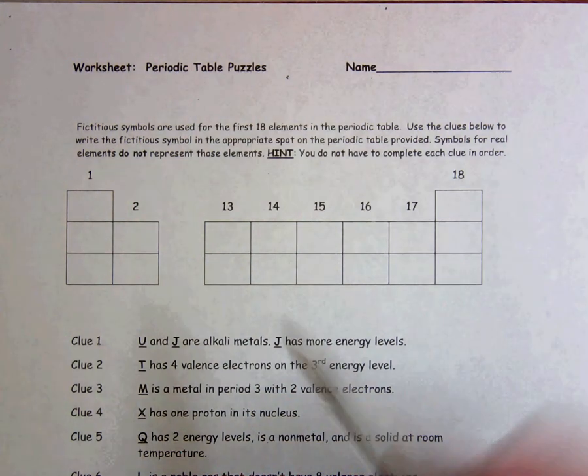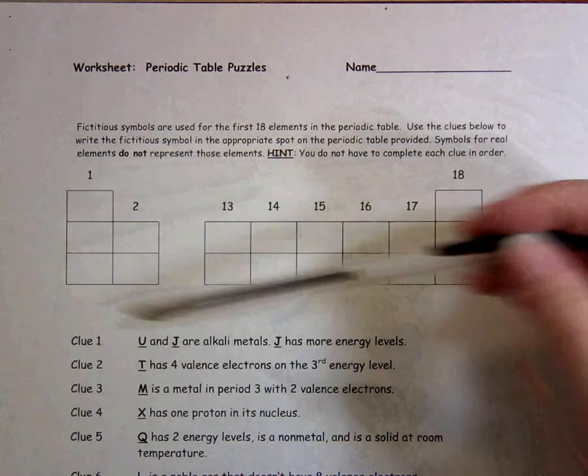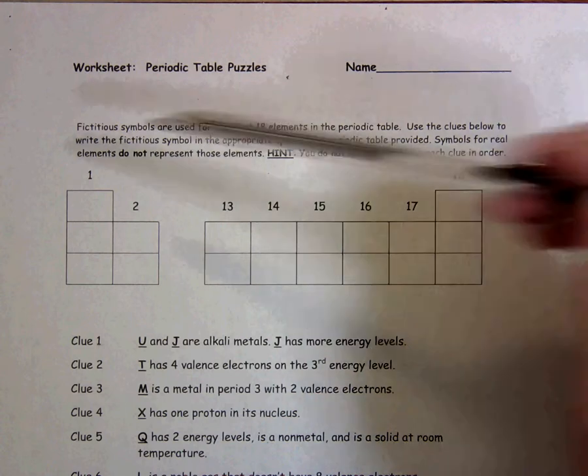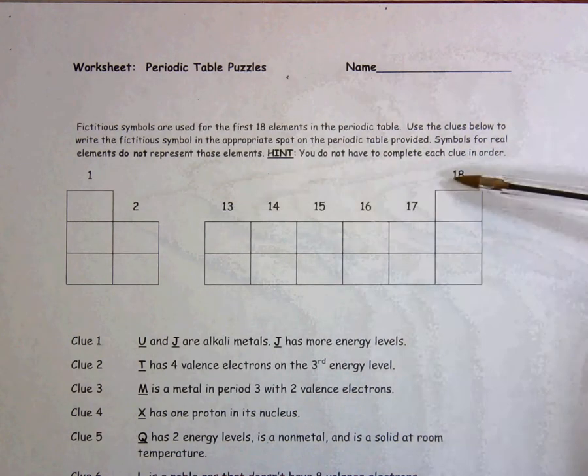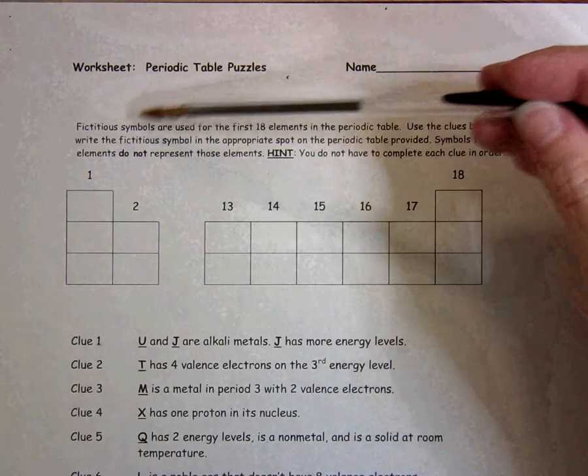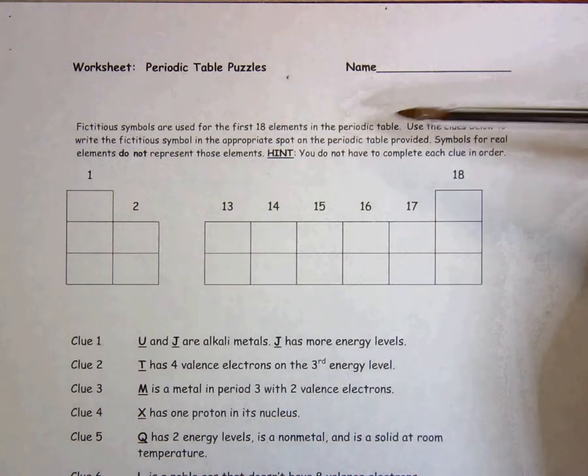Periodic table puzzles. This shows you the beginning of a periodic table. You can see the group numbers are labeled at the top. It says fictitious symbols, so fake symbols are used for the first 18 elements in the periodic table.